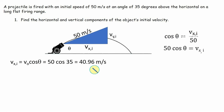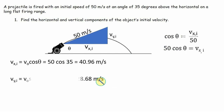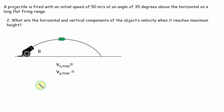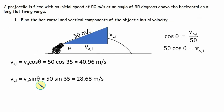That comes out to be 40.96 meters per second. Same concept for VYI — this is the opposite side, so we use sine. VYI equals the hypotenuse times sine of theta. The initial speed in the y direction is 50 times sine of 35, which ends up being 28.63 meters per second. So one of the first things you'll have to do is break down your initial speeds in the x and y directions — you need to know what those are.